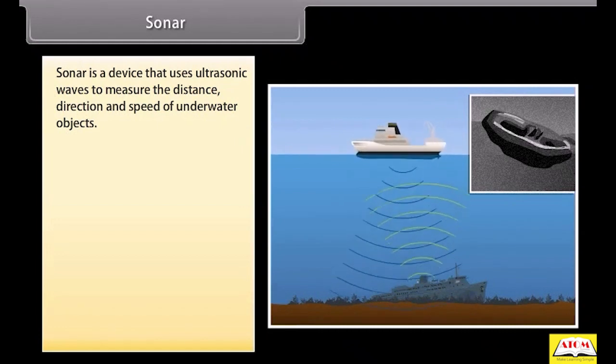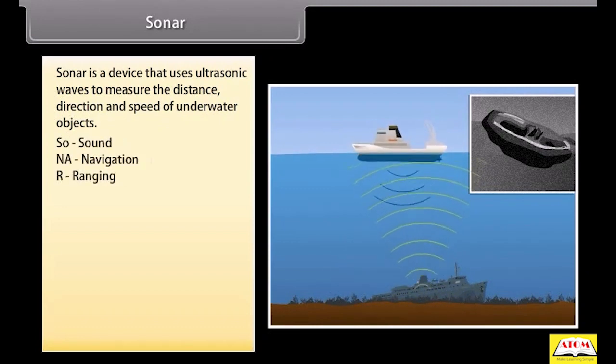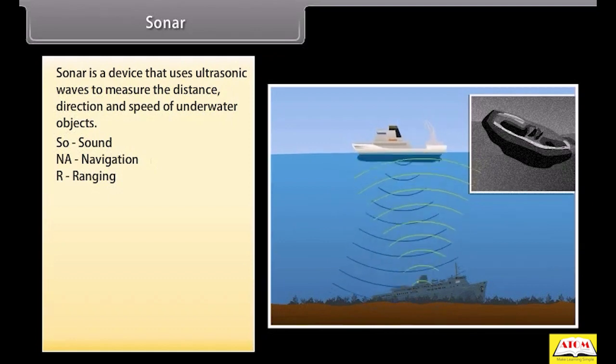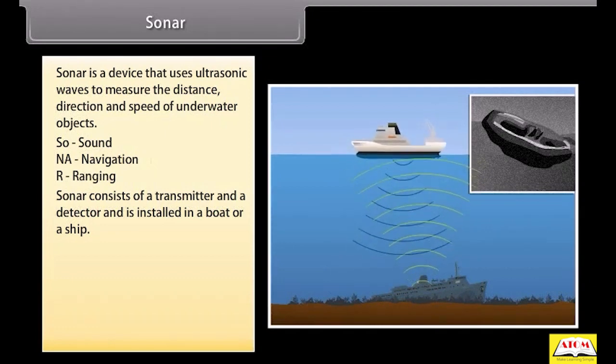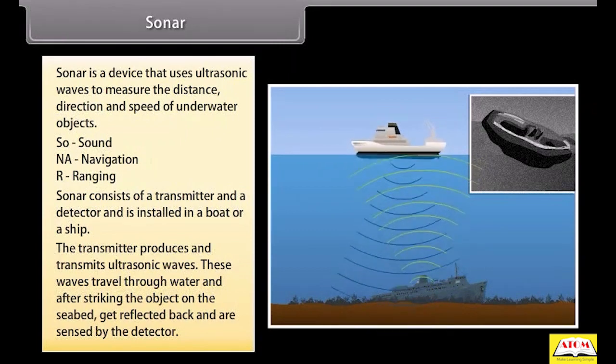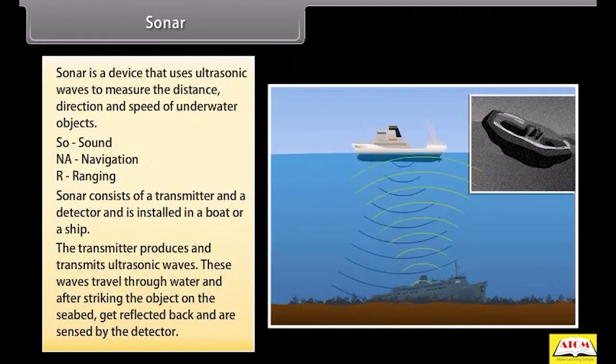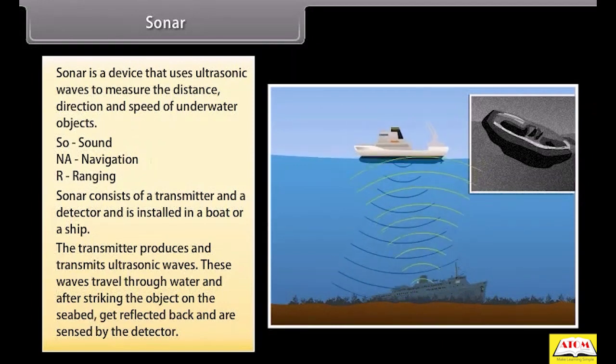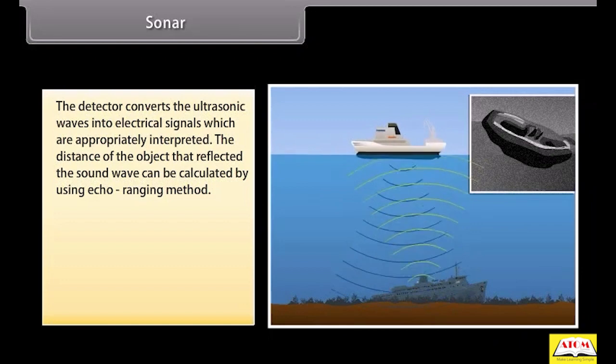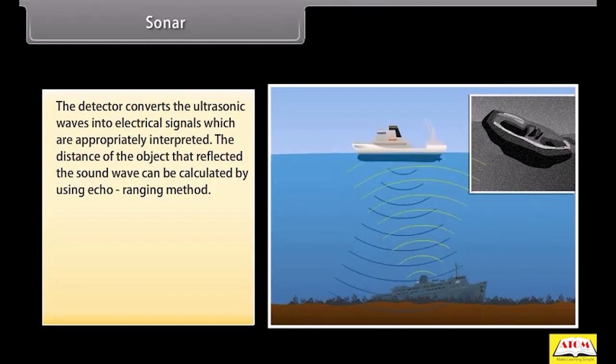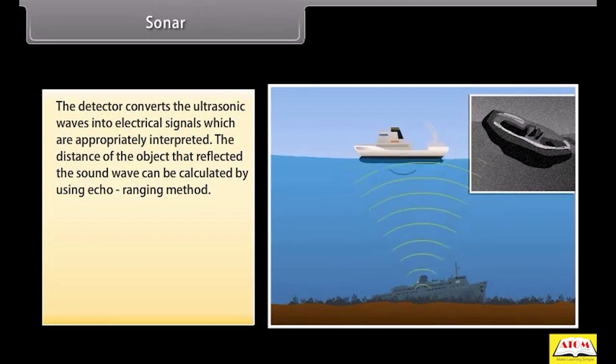Sonar. Sonar is the device that uses ultrasonic waves to measure the distance, direction, and speed of underwater objects. The word sonar stands for sound navigation and ranging. Sonar consists of a transmitter and a detector and is installed in a boat or a ship. The transmitter produces and transmits ultrasonic waves. These waves travel through water and after striking the object on the seabed get reflected back and are sensed by the detector. The detector converts the ultrasonic waves into electrical signals which are appropriately interpreted.